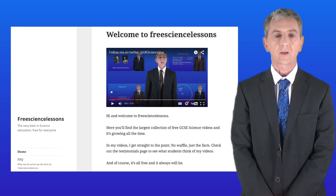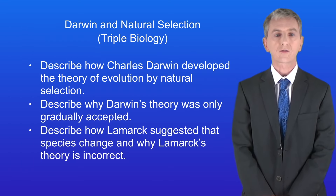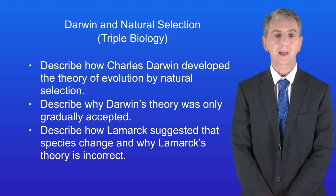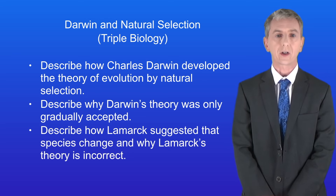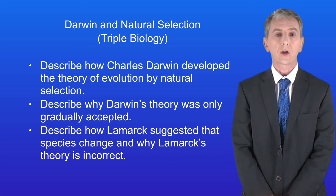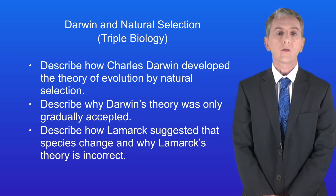Hi and welcome back to freesciencelessons.co.uk. By the end of this video you should be able to describe how Charles Darwin developed the theory of evolution by natural selection, describe why Darwin's theory was only gradually accepted, and describe how Lamarck suggested that species change and why Lamarck's theory is incorrect. All of this is for triple biology students only.